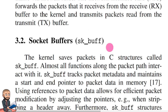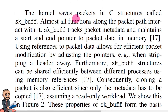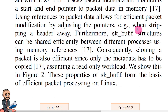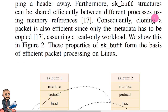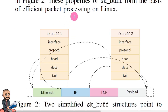Maybe somebody watching can tell me if it's the same thing as the buffer they're talking about here. The kernel saves packets in structures called sk_buff. Almost all functions along the packet path interact with it. It tracks packet metadata and maintains a start and end pointer to packet data in memory. Using references to packet data allows for efficient packet modification by adjusting the pointers, for example when stripping a header away. Furthermore, these structures can be shared efficiently between different processes using memory references. Consequently, cloning a packet is also efficient since only the metadata has to be copied, assuming a read-only workload. These properties of skbuf form the basis of efficient packet processing on Linux.